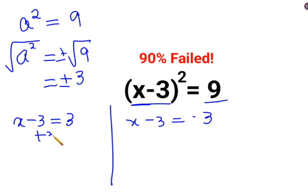In order to find the value of x we will add 3 on both sides. So here we got the value of x as 6. Similarly here also we will add 3 on both sides. So value of x comes out to be 0.